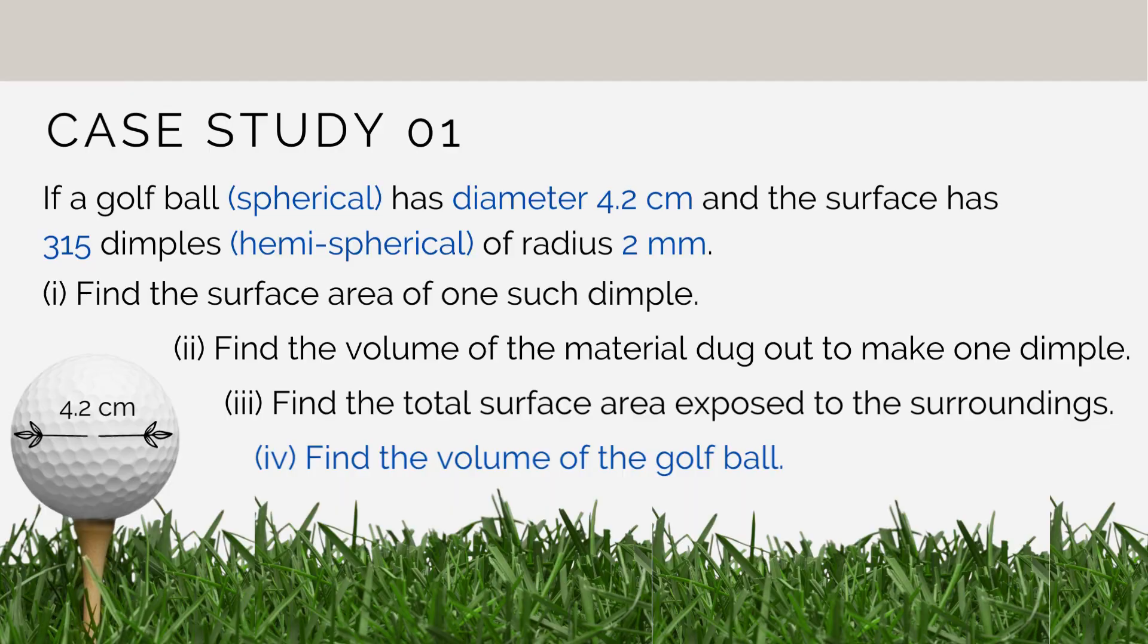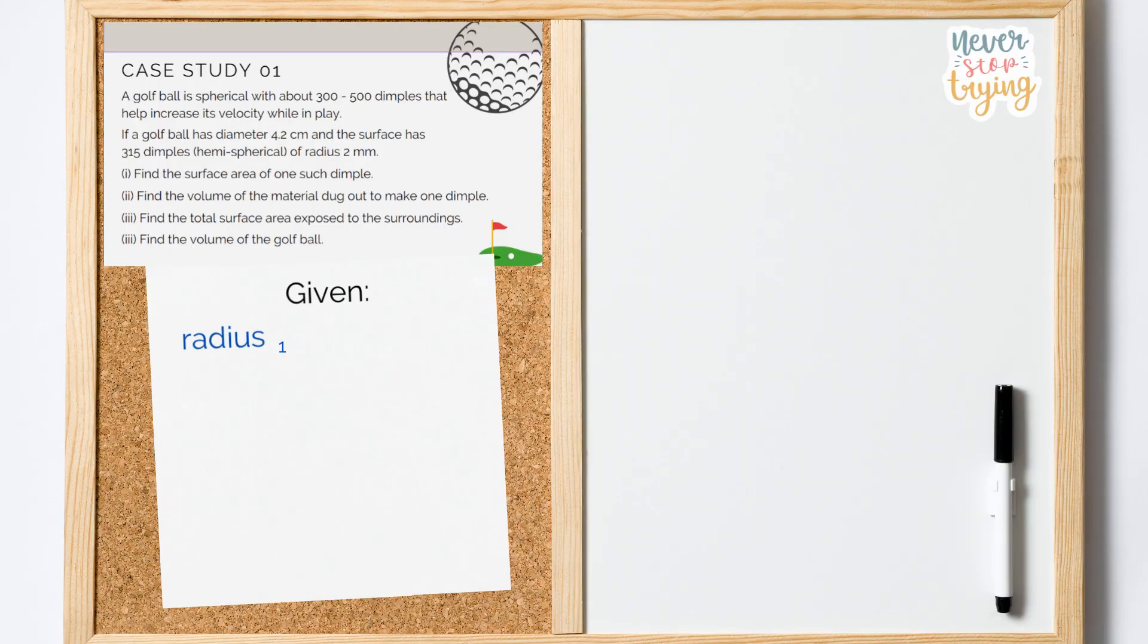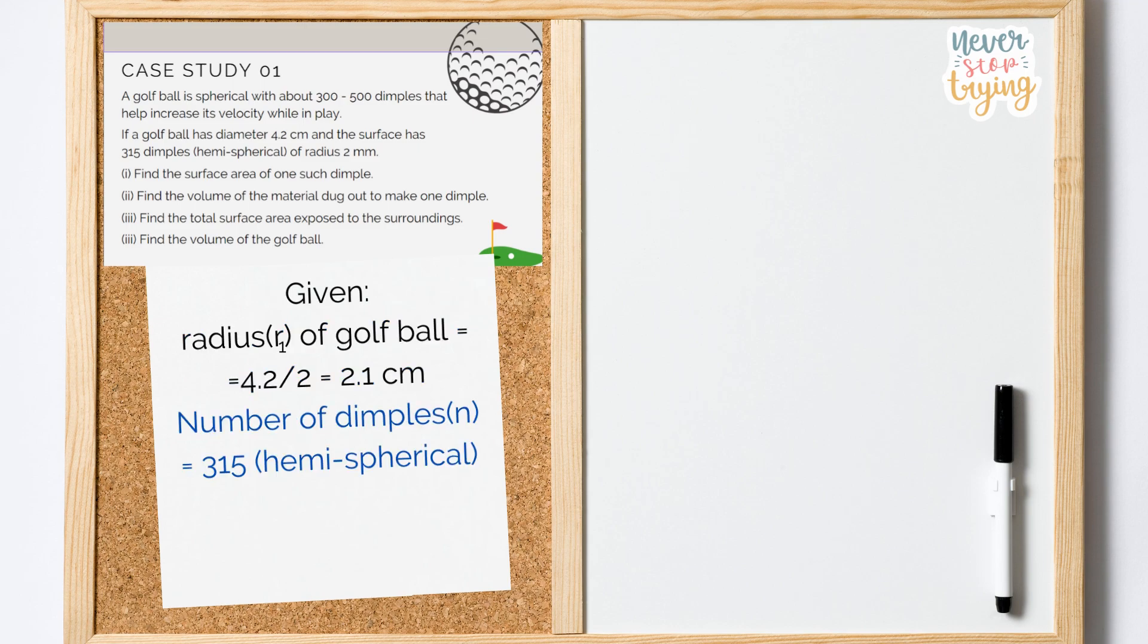We have radius of the golf ball equal to 2.1 cm. Let's call it R1. Number of dimples are 315 and they are hemispherical in shape. Radius of each dimple is 2 mm which is 0.2 cm. Let us call it R2.